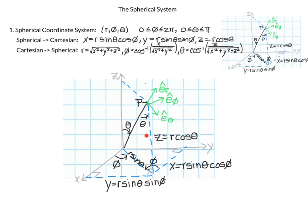The last coordinate to find is z. Because the vertical line is perpendicular to the x-y plane, we have a right triangle. Since z is the adjacent side and r is the hypotenuse, cos(θ) = z / r, which gives z = r cos(θ).